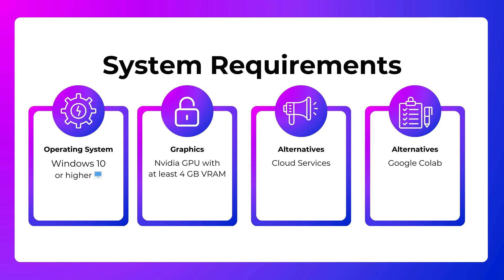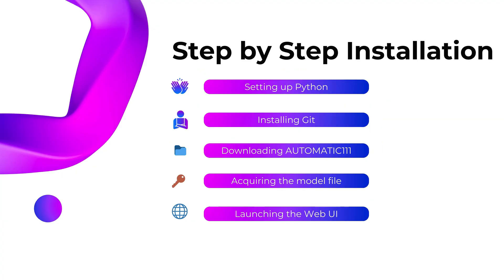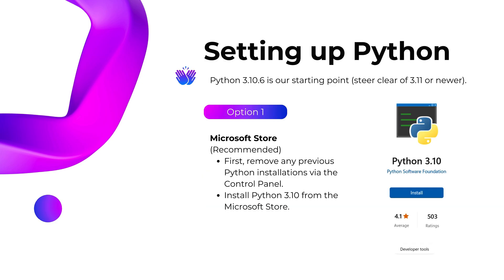Let's kick things off with Python. We're going with version 3.10.6 because it plays nice with Stable Diffusion. You can grab it from the Microsoft Store or the official Python website. Just make sure it's added to your PATH so we don't hit any bumps down the road.